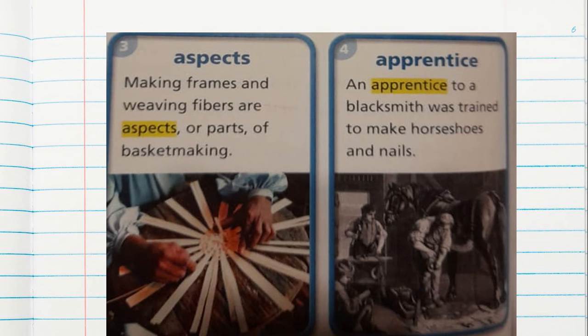Aspects: making frames and weaving fibers are aspects, or parts, of basket making. Apprentice: an apprentice to a blacksmith was trained to make horseshoes and nails.